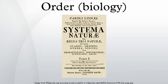In French botanical publications, from Michel Adanson's Familles Naturelles des Plantes and until the end of the nineteenth century, the word famille was used as a French equivalent for the Latin ordo. This equivalence was explicitly stated in Alphonse de Candolle's Lois de la Nomenclature Botanique, the precursor of the currently used International Code of Nomenclature for algae, fungi, and plants.